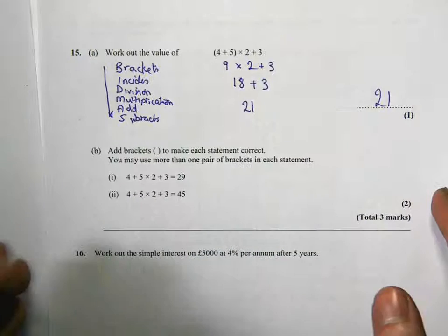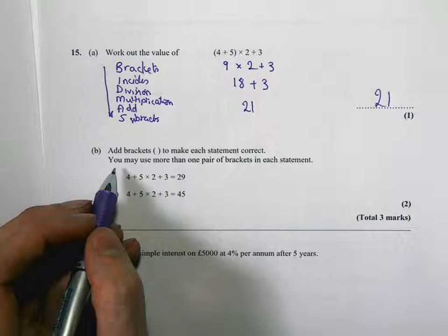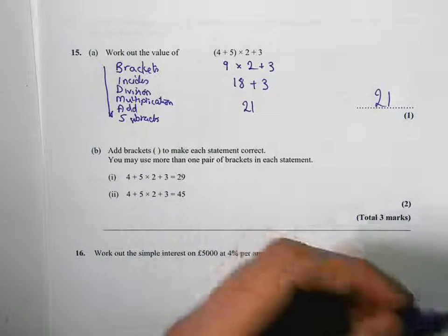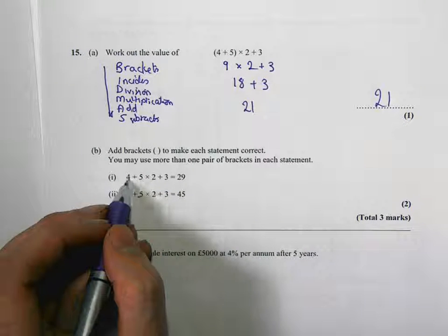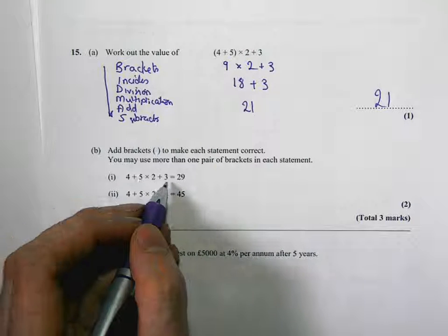Okay. Next one. We have to add brackets in to make each statement correct. So we can add more than one pair if we need to. So we need this to be 29. So think about where we can put the brackets in.